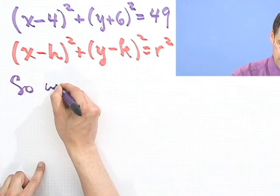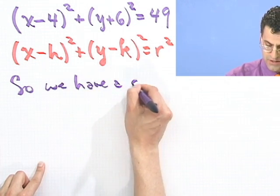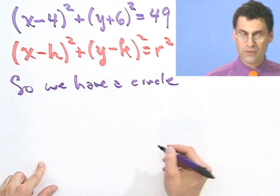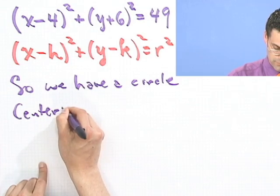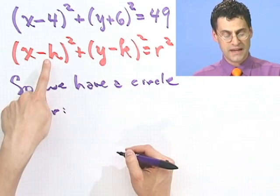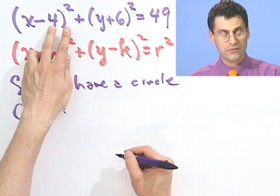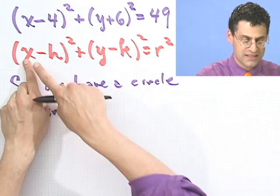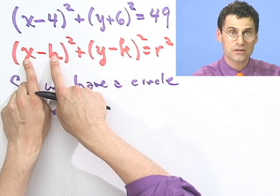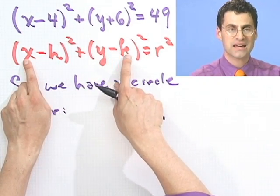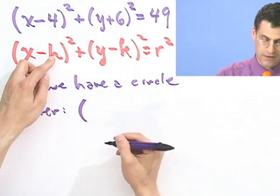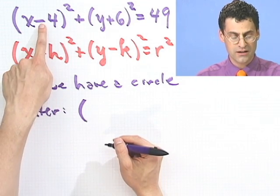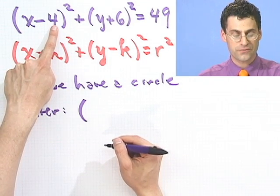So we have a circle, and where is its center? So center, okay, the center would be h, k. So I have to read that off of here. Now we have to be careful, because notice it's x minus h and y minus k. So whatever the sign is here, I've got to flip it to actually find the appropriate value for h. So for example, h here is not negative 4, but it's just 4.